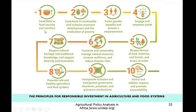The 10 principles for responsible investment in agriculture and food systems are: 1) contribute to food security and nutrition; 2) contribute to sustainable and inclusive economic development and eradication of poverty; 3) foster gender equality and women's empowerment; 4) engage and empower the youth; 5) respect tenure of land, fisheries, forests, and access to water; 6) conserve and sustainably manage natural resources, increase resilience, and reduce disaster risks; 7) respect cultural heritage and traditional knowledge and support diversity and innovation; 8) promote safe and healthy agriculture and food systems; 9) incorporate inclusive and transparent governance structures, processes, and grievance mechanisms; and 10) assess and address impacts and promote accountability.